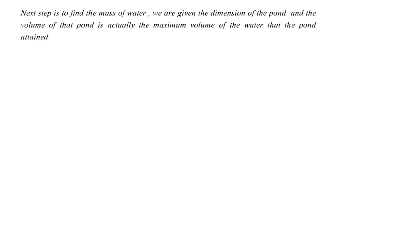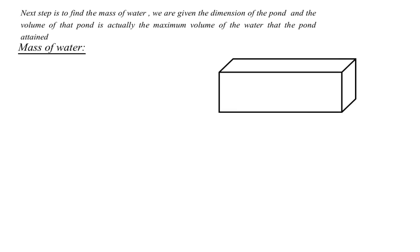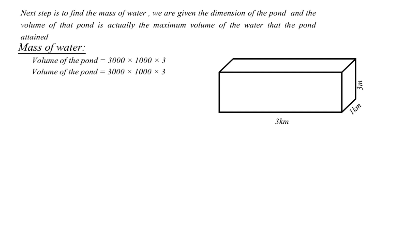Our next step is to calculate the mass of the water enclosed in the pond, which is our system. We are given the length, width, and depth of the pond as 3 km, 1 km, and 3 m respectively. First we convert 3 km and 1 km to meters. The volume of the pond = 3000 × 1000 × 3 = 9 × 10⁶ m³.